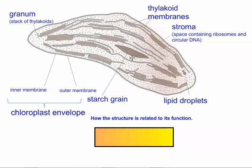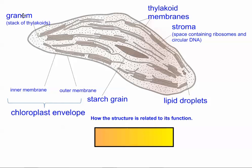They're roughly the same size as prokaryotic cells or bacteria. When looking at a chloroplast, if you were to draw it, you might draw it as kind of a little jelly bean shape, and then draw a bunch of little stacks of coins. These little stacks are called grana — grana is plural.